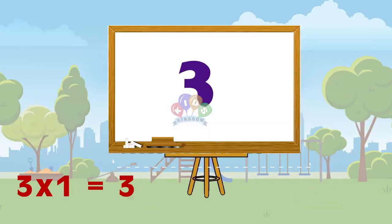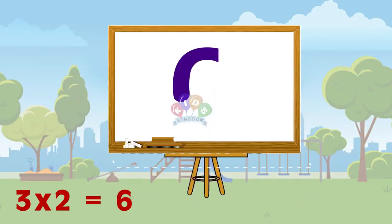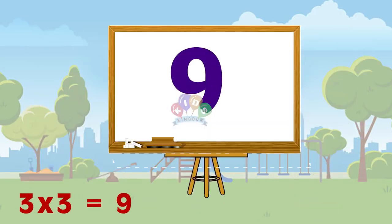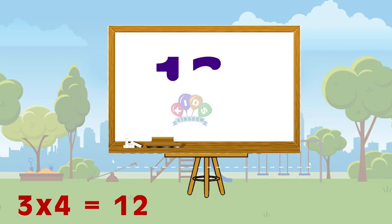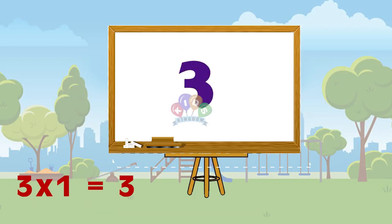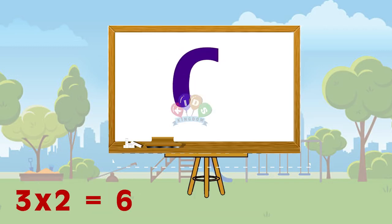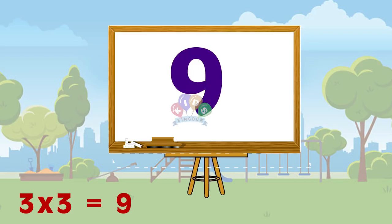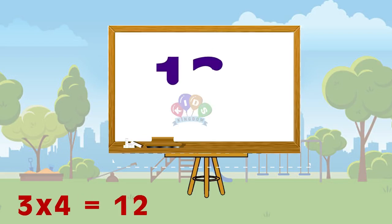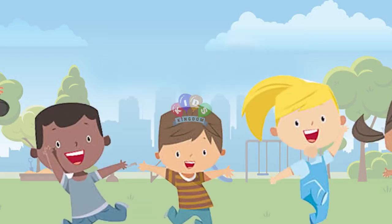Three 1s are 3, 3 2s are 6, 3 3s are 9, 3 4s are 12. Three 1s are 3, 3 2s are 6, 3 3s are 9, 3 4s are 12.